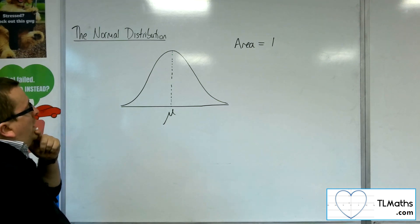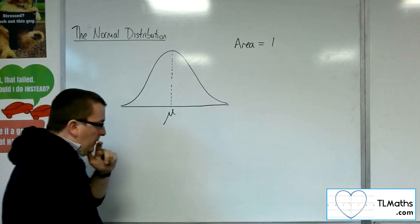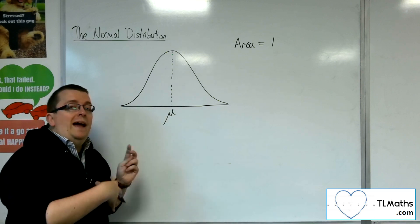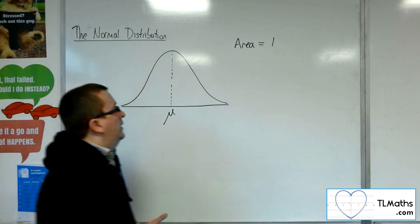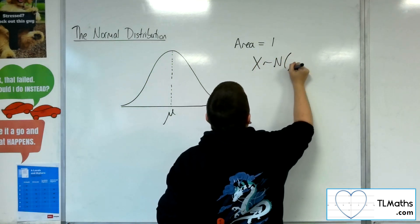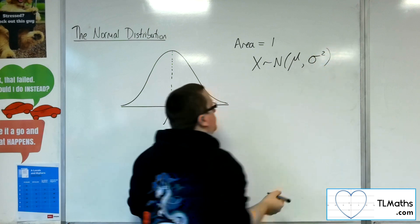Now, as to do with the shape of it, the normal distribution is defined by its mean and its variance. Okay, so how we write it down is that X is normally distributed with its mean mu and its variance sigma squared.